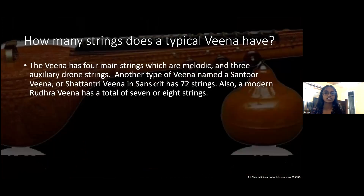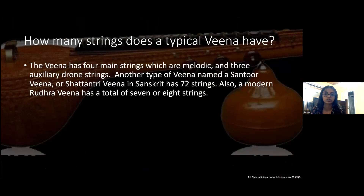How many strings does a typical Veena have? As you can see, the Veena has four main strings which are melodic and three auxiliary drone strings. Another type of Veena named the Santurvina or Shahantri Veena in Sanskrit has 72 strings. A modern Rudra Veena has a total of seven or eight strings, depending on the type.